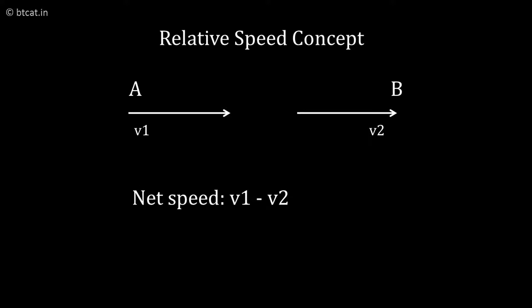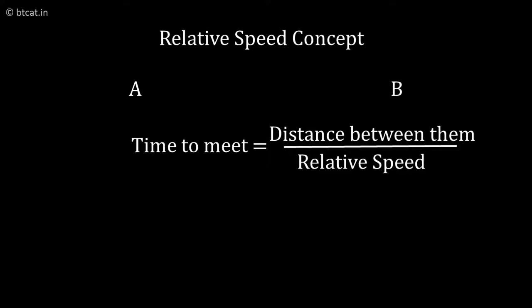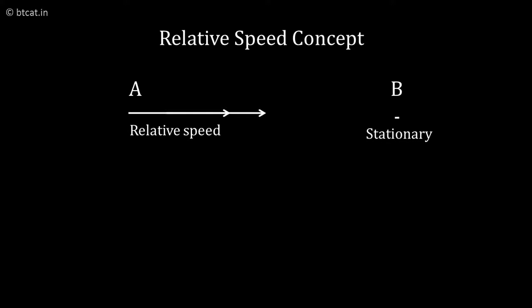We can find the time taken for them to meet by dividing distance by their relative speed. We can assume that one person is stationary and the other person is coming at a relative speed of v1 minus v2 to meet the other person. Let us understand a question based on it.